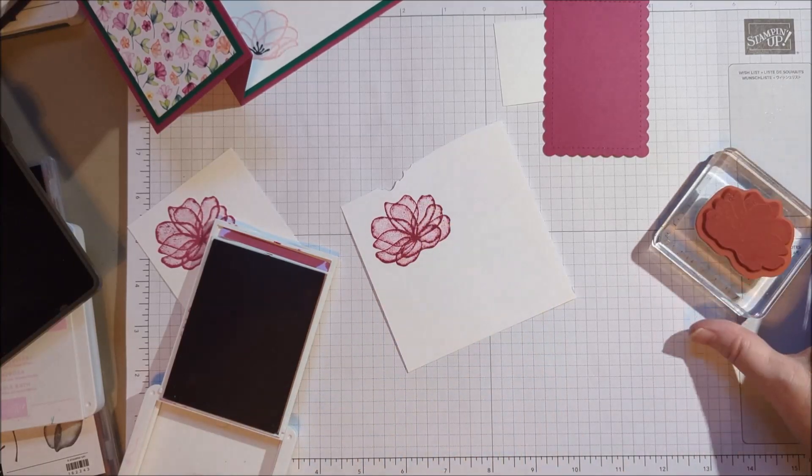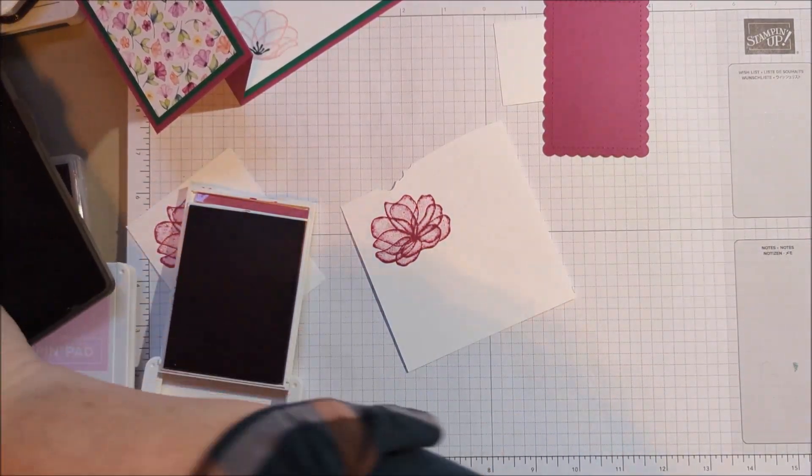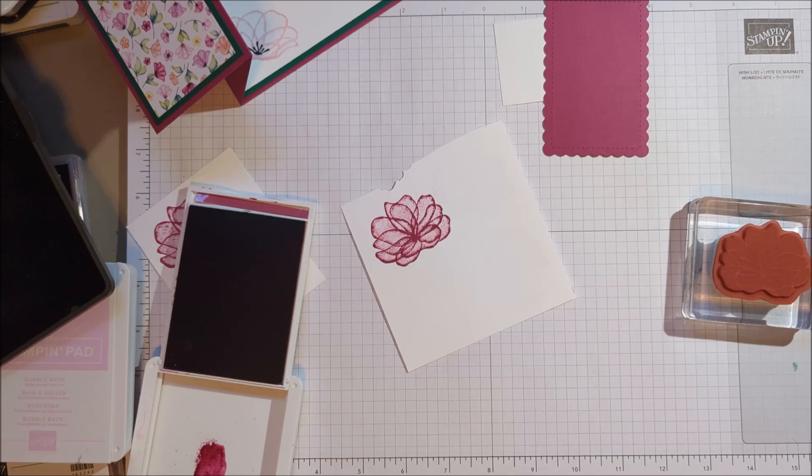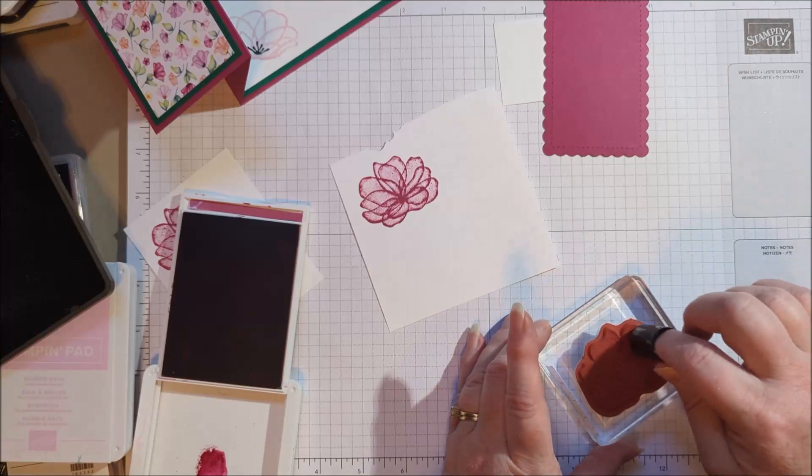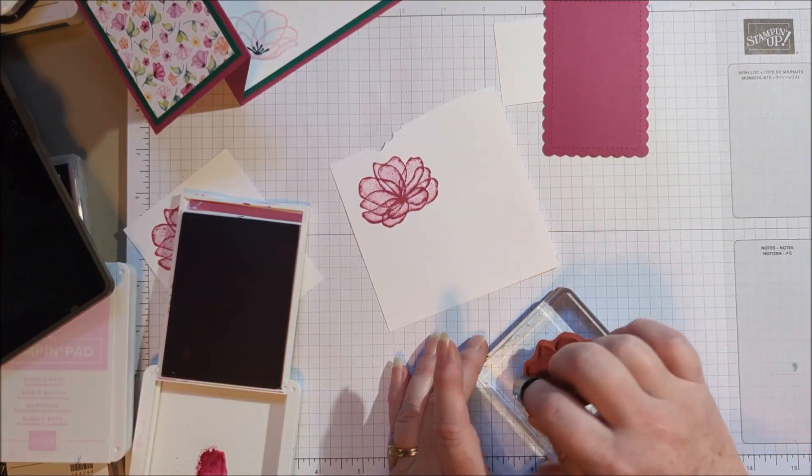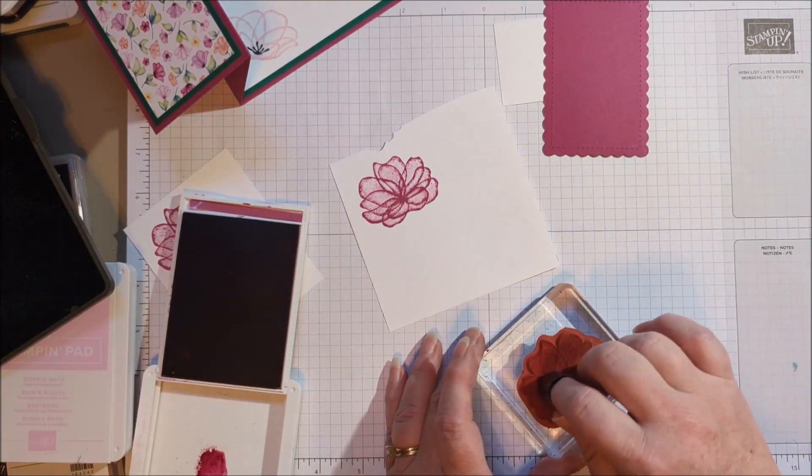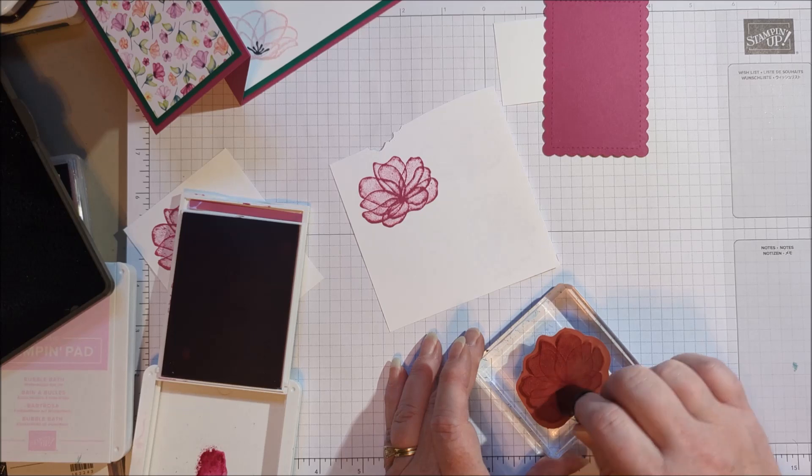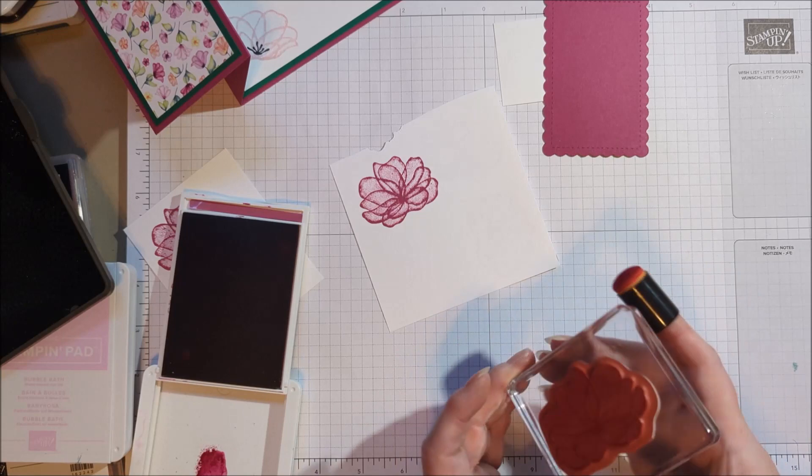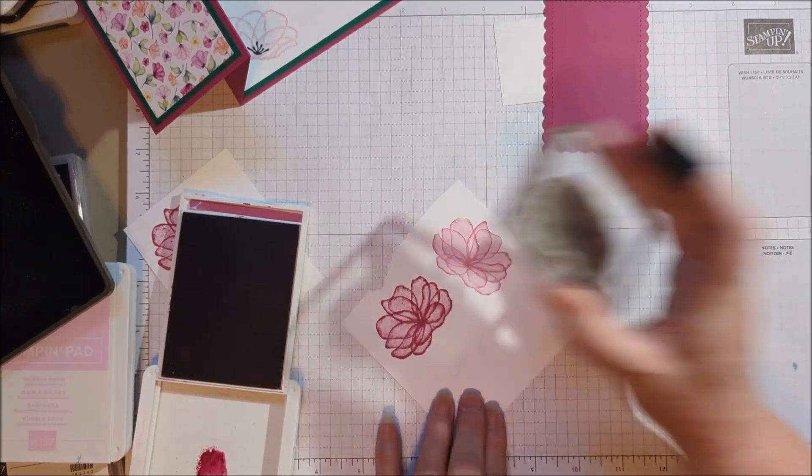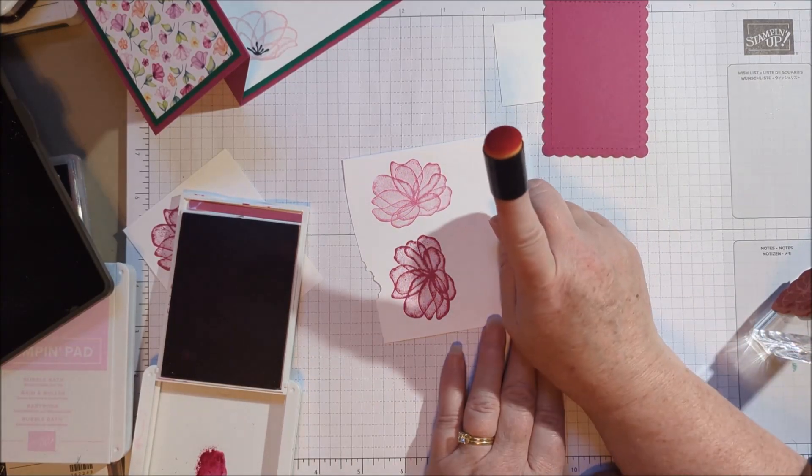By not pressing down as much, I don't have as much of those little filled in areas. But another way to do it is to use a sponge dauber when your ink pad is super juicy and you don't want to get a messy image. Look how soft that is. So that sponge dauber is going to be your friend.